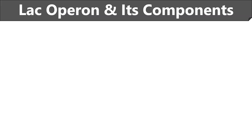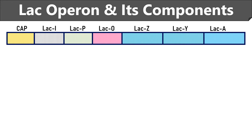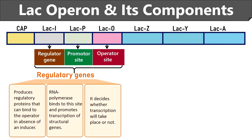Now we will discuss the components of the lac operon. This is the lac operon segment in which lacI is the regulatory gene. LacP and lacO contain regulatory DNA sequences. Then lacZ, lacY, and lacA are the structural genes that contain coding DNA sequences. LacI is the regulatory gene that controls the functioning of the promoter and operator region. LacI gene produces regulatory or repressor proteins that can bind to the operator site in the absence of inducer or lactose. Then lacP is the promoter site that is present in between the regulator gene and the operator site, and it contains regulatory DNA sequences to which the RNA polymerase binds or promotes transcription. Then lacO is the operator site present between the promoter sequences and structural genes. It also contains regulatory DNA sequences to which the lacI repressor protein or regulatory protein can bind, by either promoting or inhibiting the transcription process.